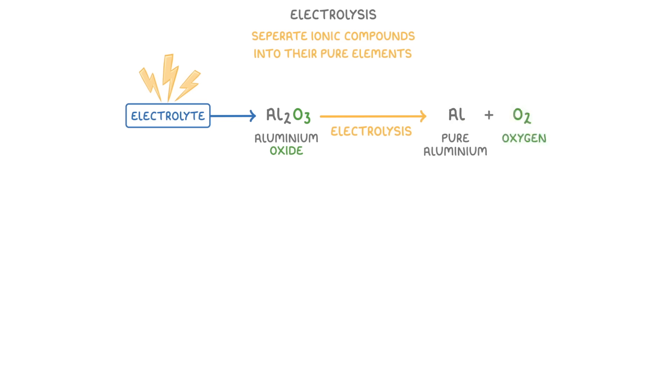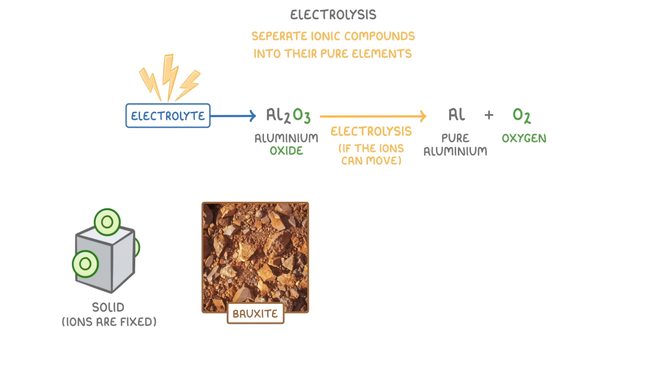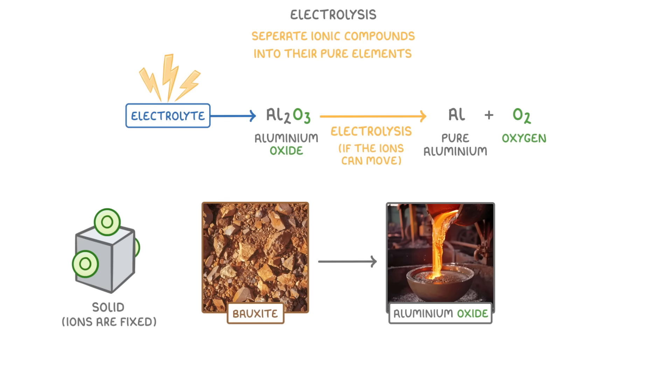The issue though is that electrolysis only works if the ions can move. But aluminum oxide is solid, so the ions are all fixed in place. And to make matters worse, it's found within an ore called bauxite. So before we can do anything, we have to somehow turn this solid bauxite into molten aluminum oxide. Because if it's molten, then the ions will be free to move around, which is what it needs to be considered an electrolyte.